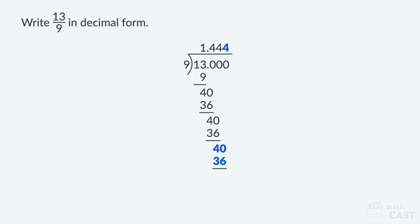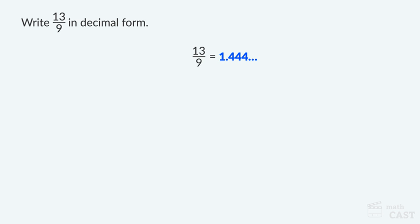I think we can see that this pattern is going to continue forever. To show that a pattern continues forever, we can use a set of three dots called an ellipsis. We found that the decimal form of 13 ninths is 1.444… — the digit 4 repeats forever. A decimal is a repeating decimal if a digit or a group of digits other than 0 repeats forever after the decimal point. The decimal form of 13 ninths is a repeating decimal.